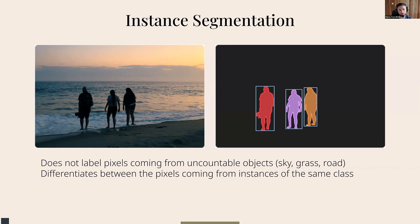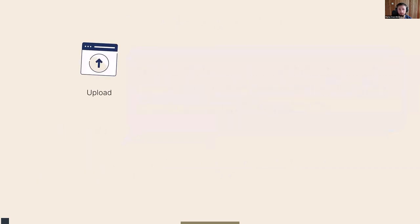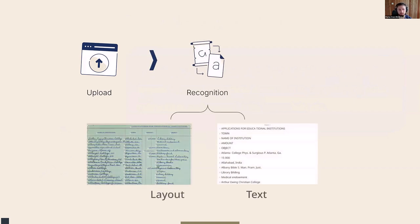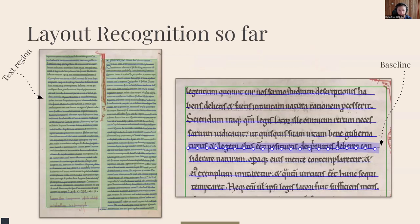With instance segmentation, three different persons on the image are each detected as separate objects — not just labeled with a class, but every single object is detected as such. That is the very magic behind the table model. With this technology adapted to historical documents, we are able to recognize tabular data, identify it from historical documents, and export it into spreadsheets.